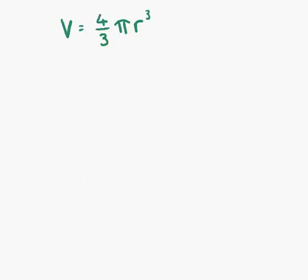This is example number 2. The formula V equals 4 thirds pi R cubed is the formula for finding the volume of a sphere. The subject of the formula is V, and we want to change the subject of the formula to be R.